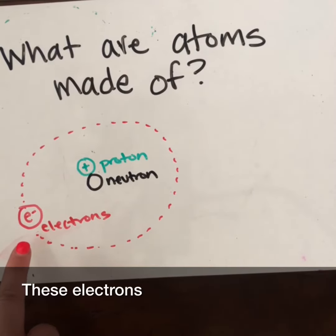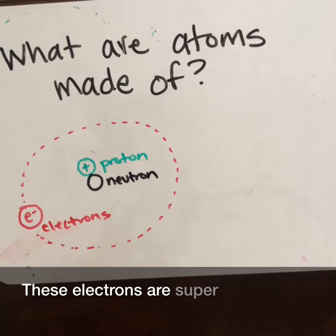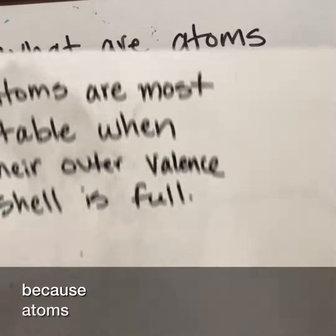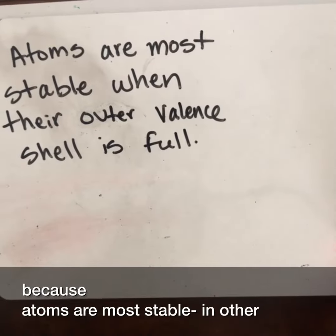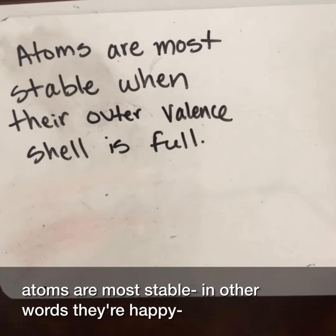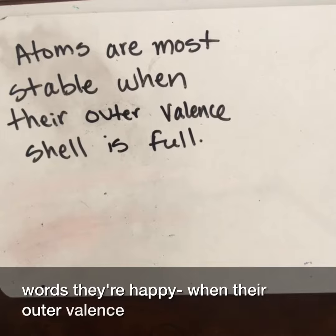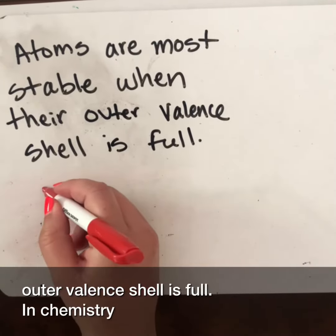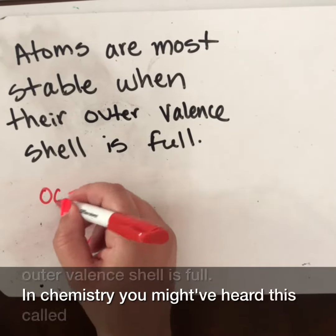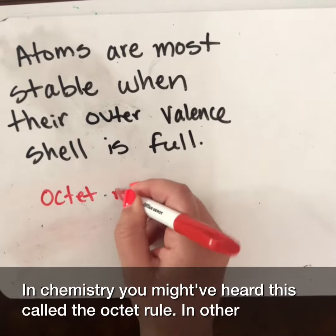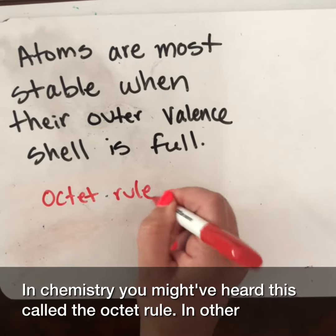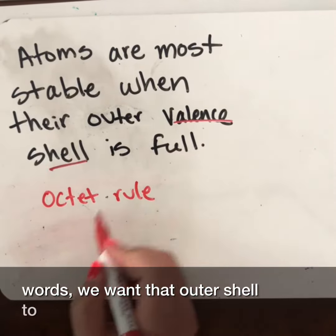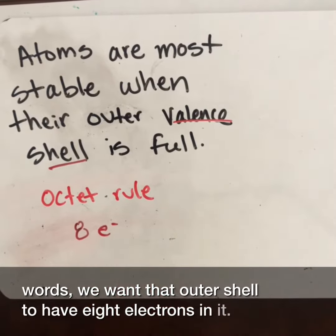These electrons are super important because atoms are most stable — in other words, they're happy — when their outer valence shell is full. In chemistry, you might have heard this called the octet rule. In other words, we want that outer shell to have eight electrons in it.